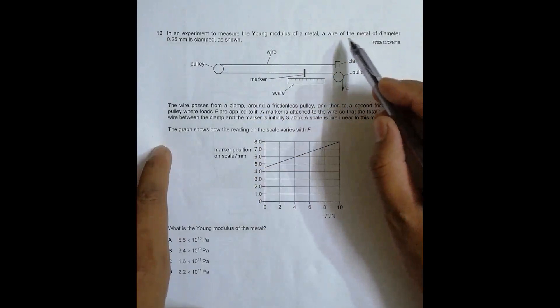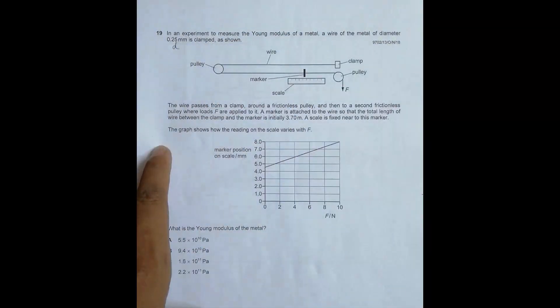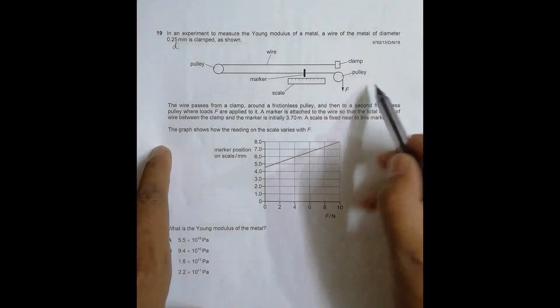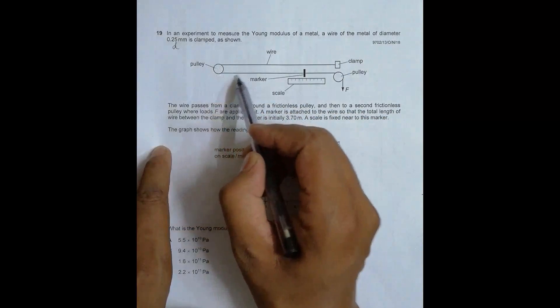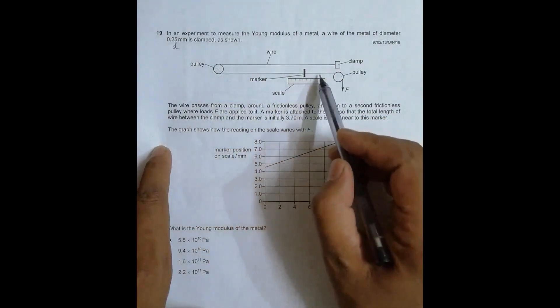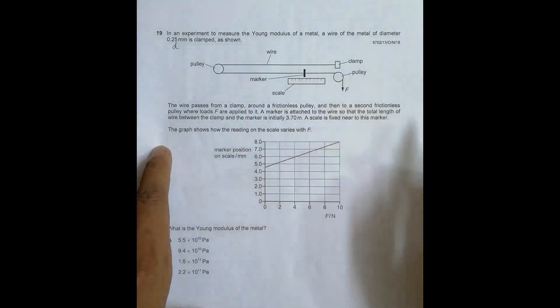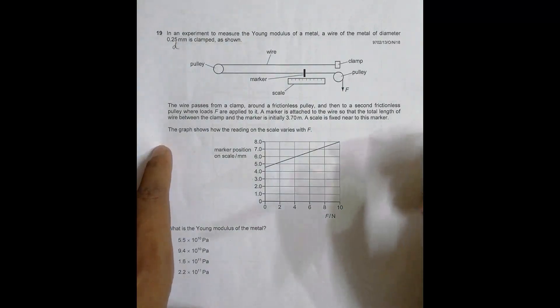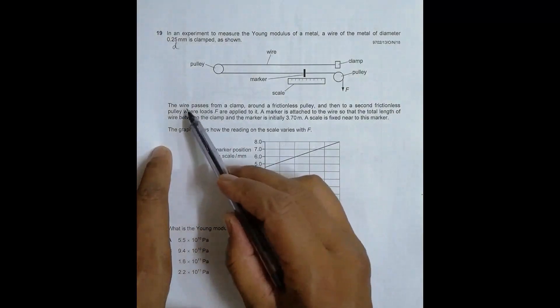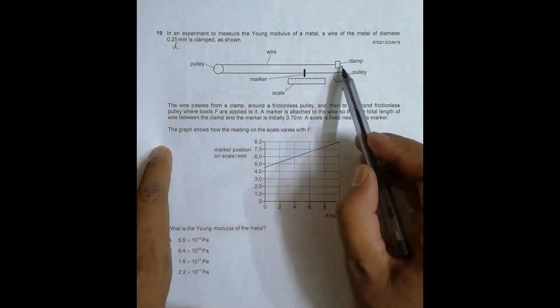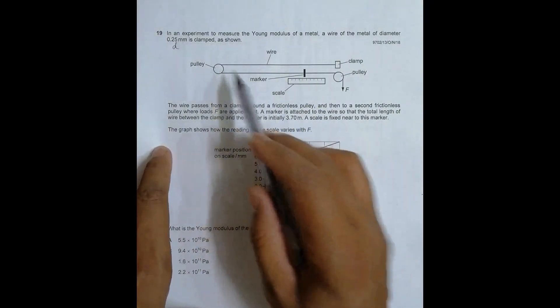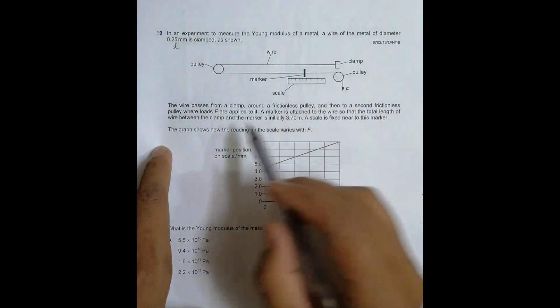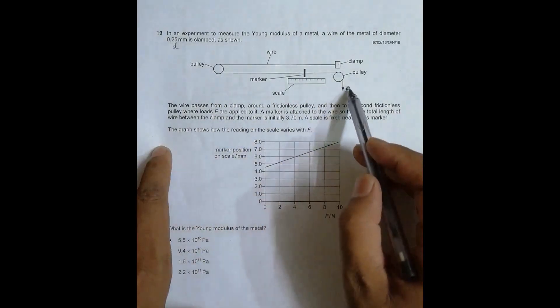The wire of diameter 0.35 millimeters is clamped — here we have the clamp, then it goes around a pulley, there's a marker, another pulley, and here we apply the force. The wire passes from a clamp, around a frictionless pulley, then to a second frictionless pulley where the load F is applied.